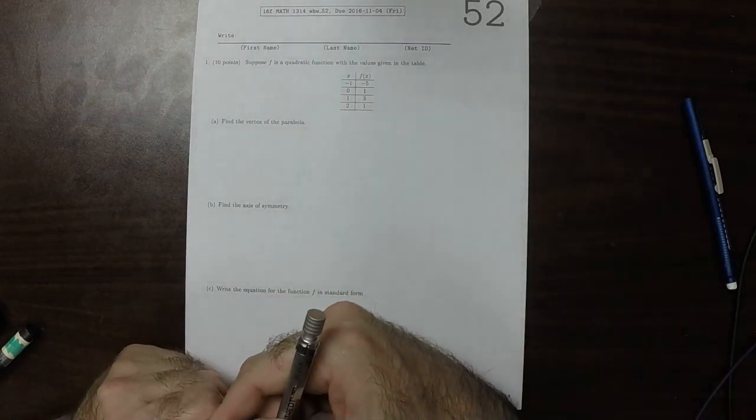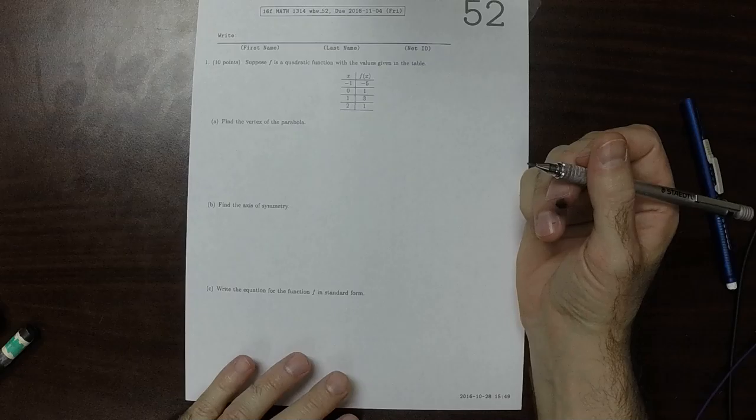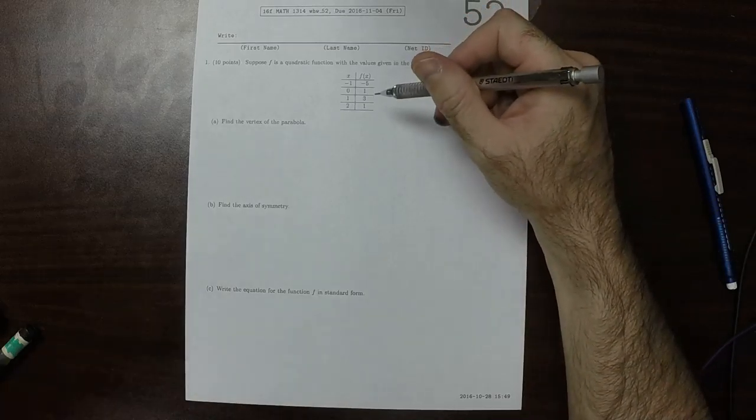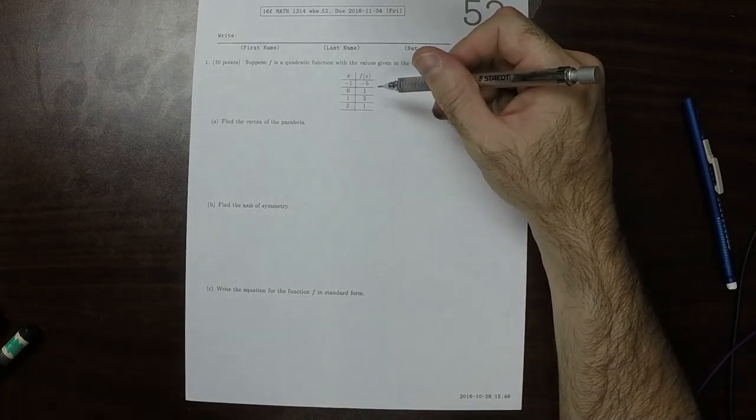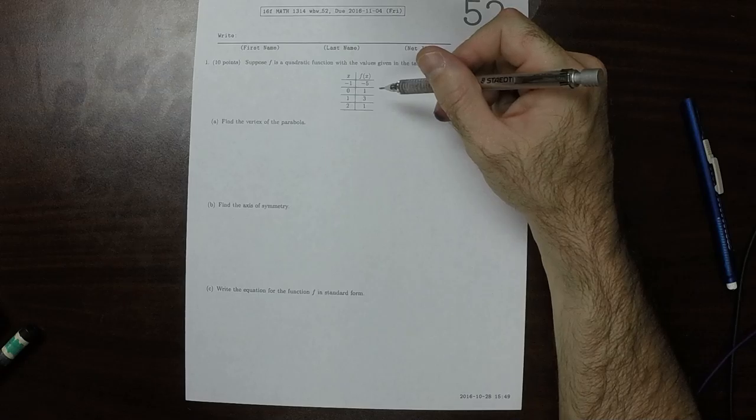This is the solution to written homework 52. So we're given a quadratic with these outputs. Find the vertex of the parabola.